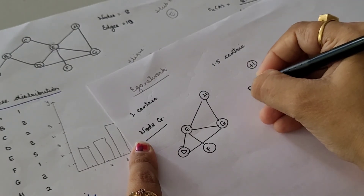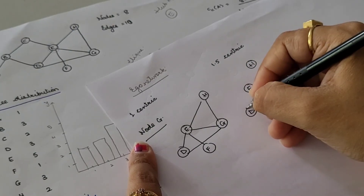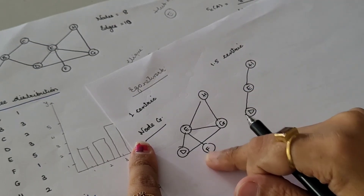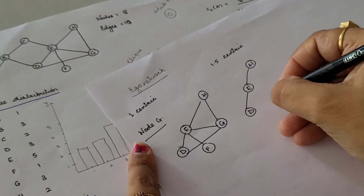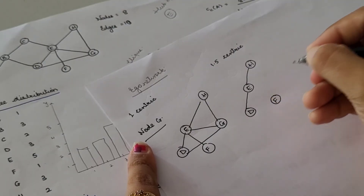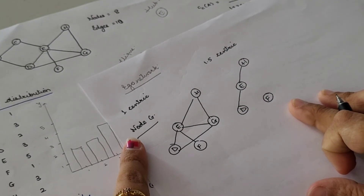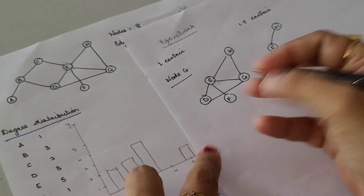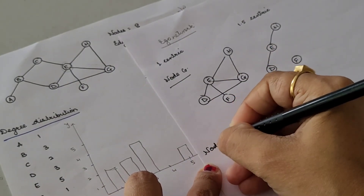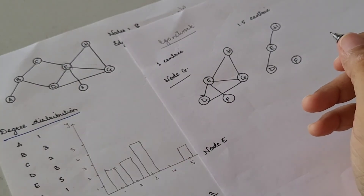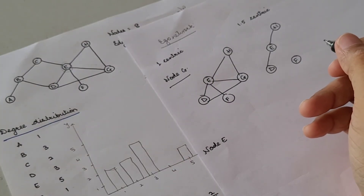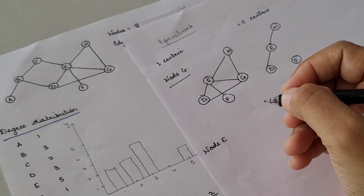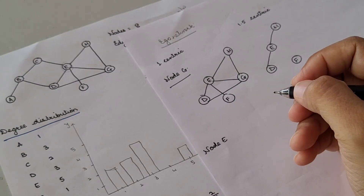Once we remove node G, what remains is H, E, and D. D has no connection with E once G is removed — so we delete the connections with respect to G and draw that remaining graph. This is called the 1.5 egocentric network for node G. We will now draw it for node E as well, since E has the maximum number of paths to reach each and every node.